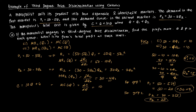Now we compute the firm's total profit. Total profit equals R1 plus R2 minus the cost. R1 is price P1 times quantity Q1, and R2 is price P2 times quantity Q2.